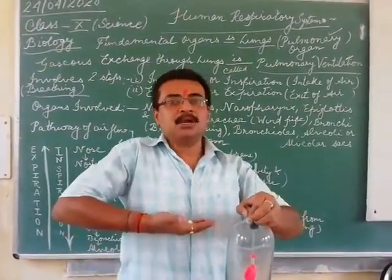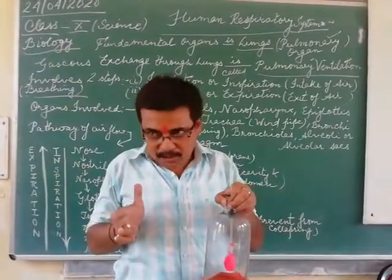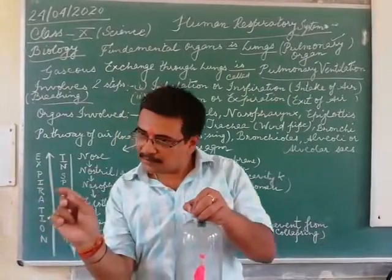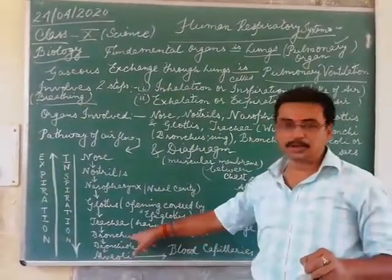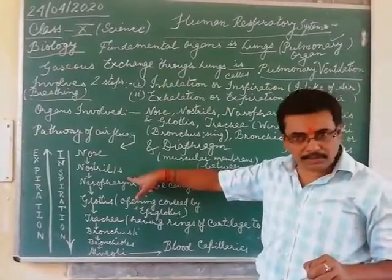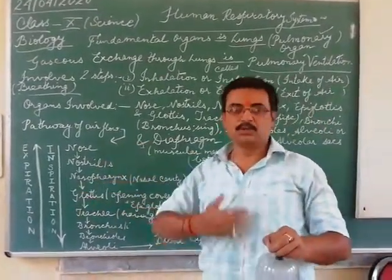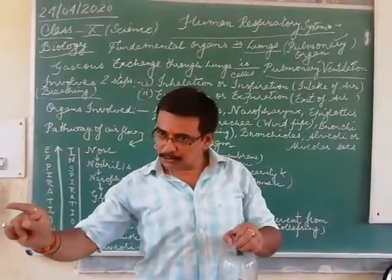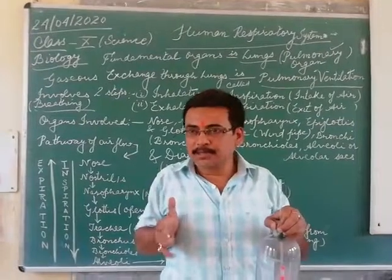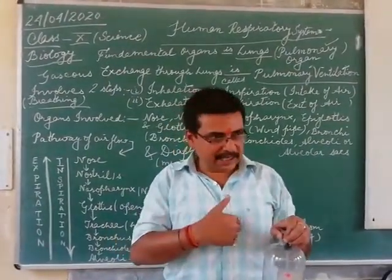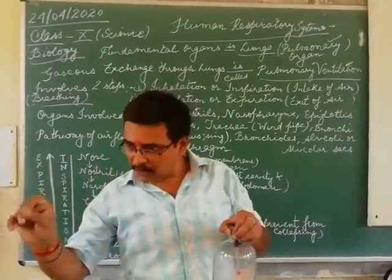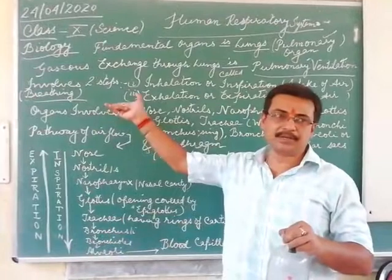During expiration, the diaphragm comes up. The chest cavity contracts, so the internal volume becomes less. This pressurizes the alveoli. From the alveoli, air goes to bronchioles, bronchus, trachea, glottis, nostrils, and nose. So diaphragm goes down — inspiration, things go in. Diaphragm goes up — the volume collapses due to contraction of the thoracic cavity, which pressurizes the alveoli. The alveoli squeeze and give out the air.